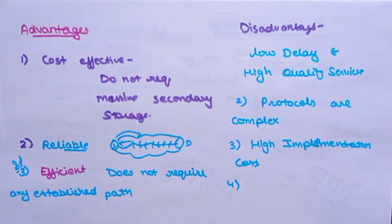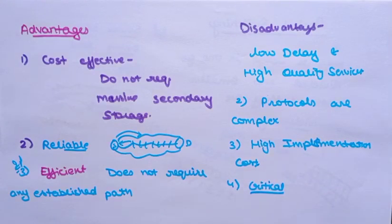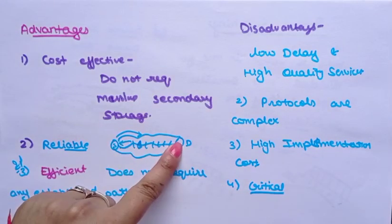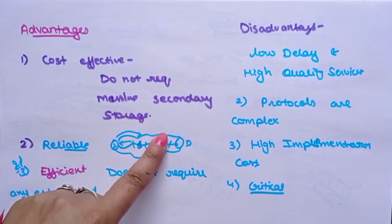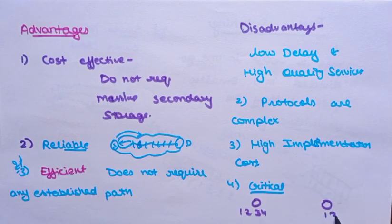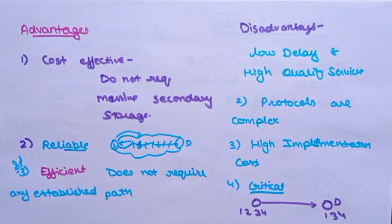If the network is overloaded or corrupted, it requires retransmission of lost packets, and it can lead to loss of critical information if errors are not recovered. For example, if four packets are sent — one, two, three, four — and packets one, three, and four reach the destination but packet two does not due to traffic, the whole message cannot be reassembled correctly. This retransmission process is also time consuming.